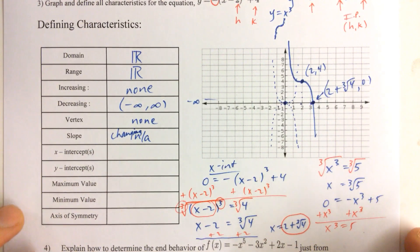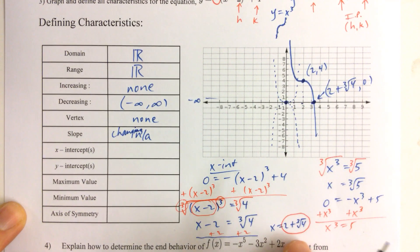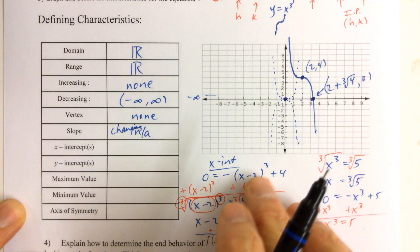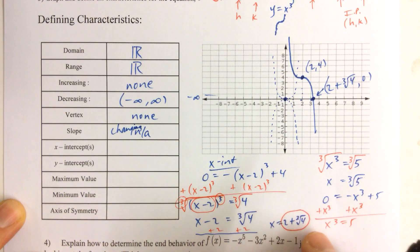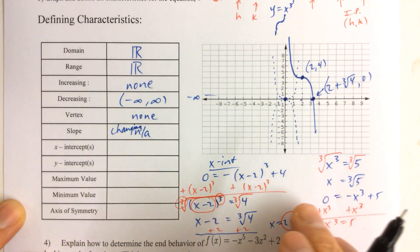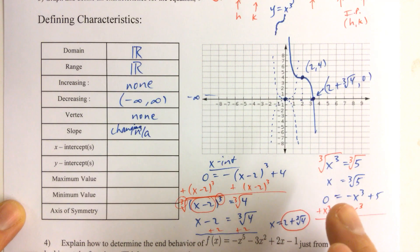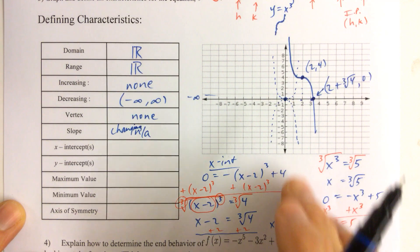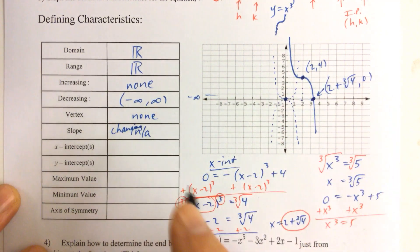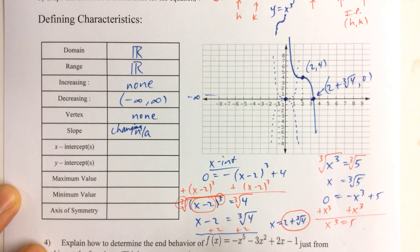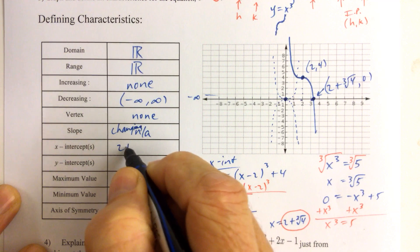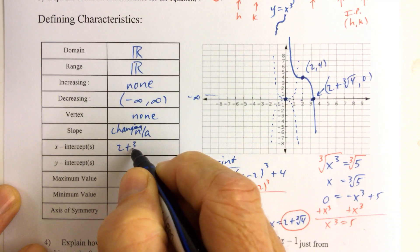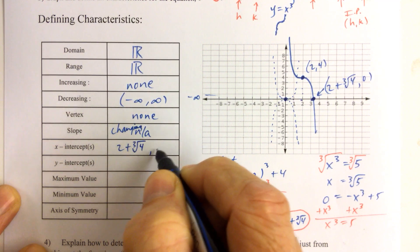So hopefully that helps you understand why we're only going to get one solution to a cubic function equation, whereas we would have gotten two solutions to the quadratic, because the quadratic would cross the x-axis at two points. So hopefully we've clarified that. And the x-intercepts, 2 plus cube root of 4, comma 0.